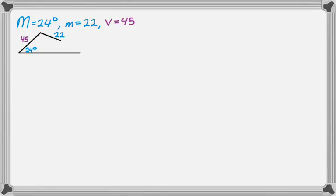So the first thing I do when I'm doing the ambiguous case is I check to see if the side opposite the angle is greater than the other side, because if it is, there's one triangle, and I solve it, and I'm done. But as you can see in this case, 22 is less than 45, which means I need to go to the next thing.